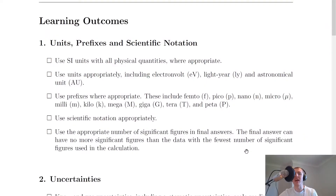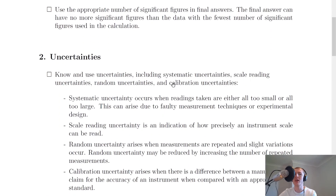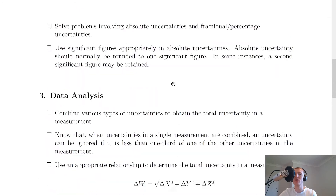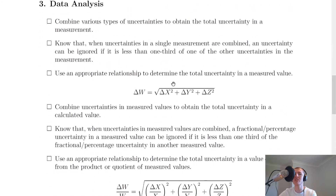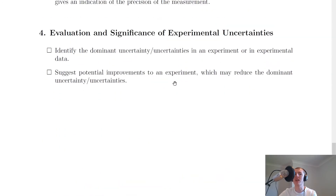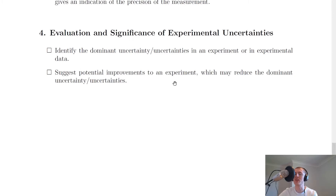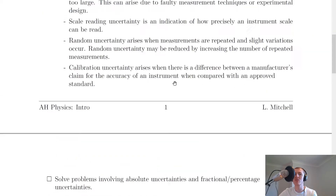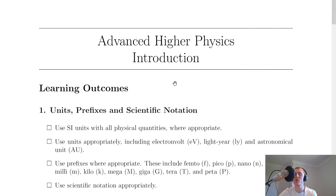The SQA splits the introduction into four topics. We have units, prefixes and scientific notation. We then have uncertainties. And if I scroll down a bit, we have data analysis. And then we have evaluation and significance of experimental uncertainties. So let's start at the beginning and go through each one.